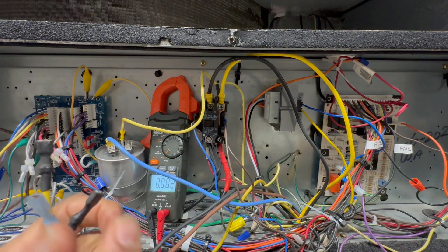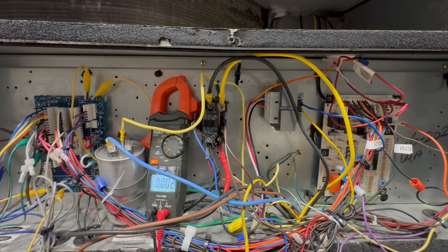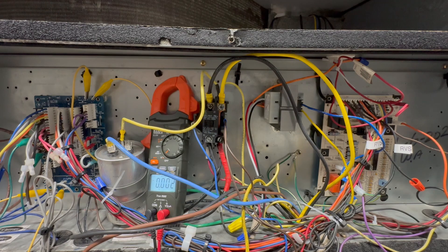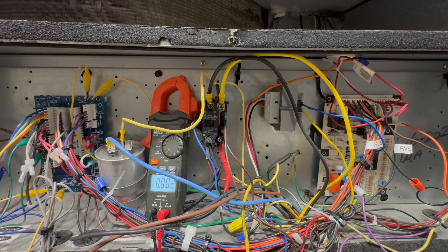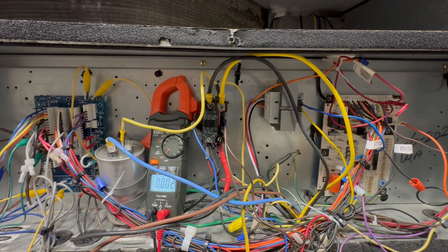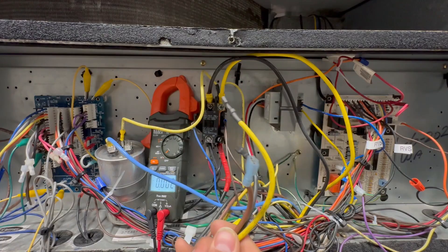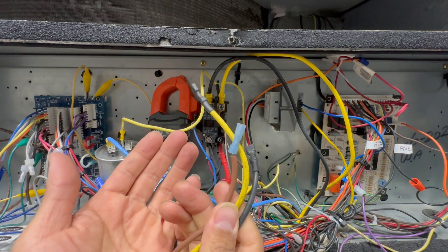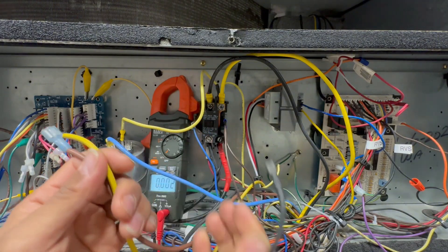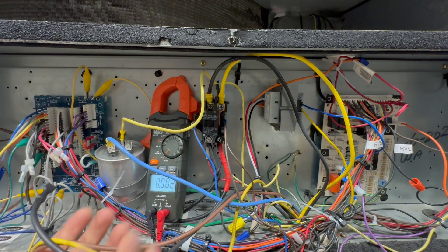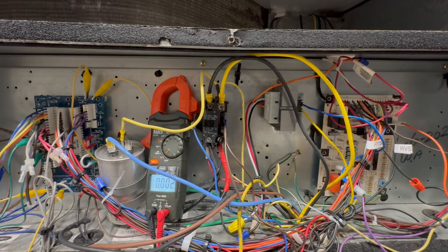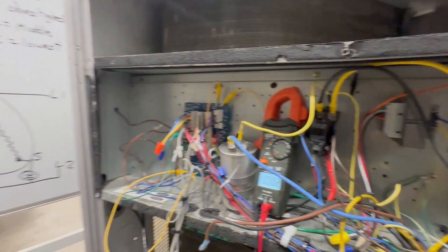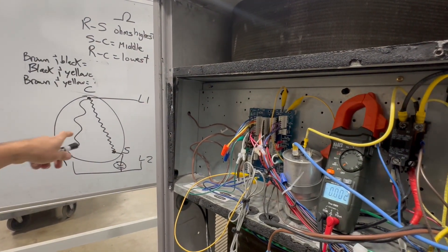So I got these three wires here. The condenser fan motor, just like when checking the compressor in an earlier video, it's also a PSC, a permanent split capacitor motor. And so the way we check it is the same way we would check a compressor. So we got these three wires, but let's say you didn't know where these wires went to. How would you identify which one's your start, which one's your run, and which one's your common?